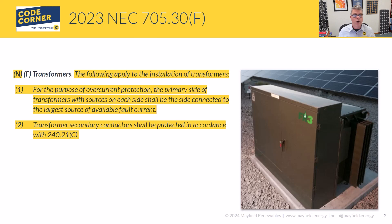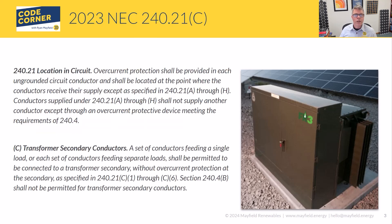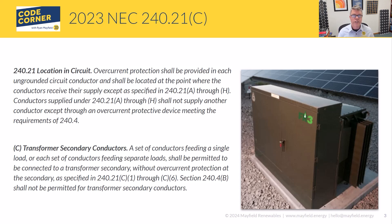Once we have that established, transformer secondary conductors are going to be protected per 240.21C. That establishes how we protect the secondary side of our transformers. Article 240 is overcurrent protection — protecting conductors and equipment. When you look at 240.21, it talks about the need to protect both conductors and transformers, and there are requirements for both. We can use the same overcurrent devices to meet both requirements; we just have to look at both and make sure they're satisfied.